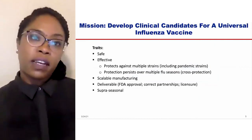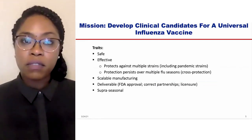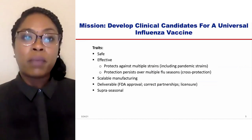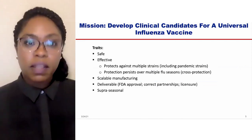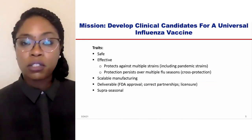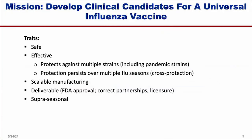In this vein, at the VRC our mission has become to develop clinical candidates for universal influenza vaccines that are safe, effective, protect against multiple strains including pandemic strains, and where protection persists over multiple flu seasons — embodying cross-protection. The manufacturing of these vaccines also needs to be scalable, because they need to be delivered to meet demand both here in the U.S. as well as globally.